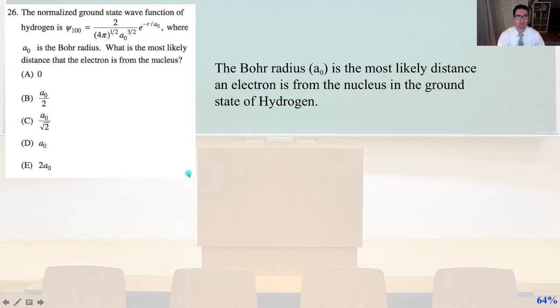Number 26. The normalized ground state wave function of hydrogen is 2 over... There's a lot of coins there. You can read it for yourself. Where A0 is the Bohr radius was the most likely distance that the electron is from the nucleus. A0 is the Bohr radius in hydrogen is the ground state of hydrogen. That's the one model that the Bohr radius is extremely accurate. By definition, the Bohr radius A0 is the most likely distance an electron is from the nucleus in the ground state of hydrogen. And that is simply letter D.